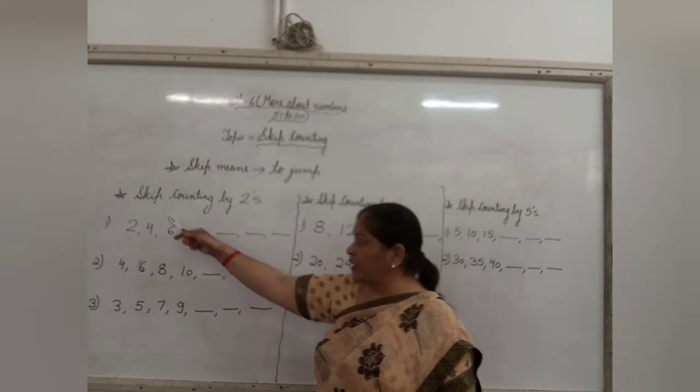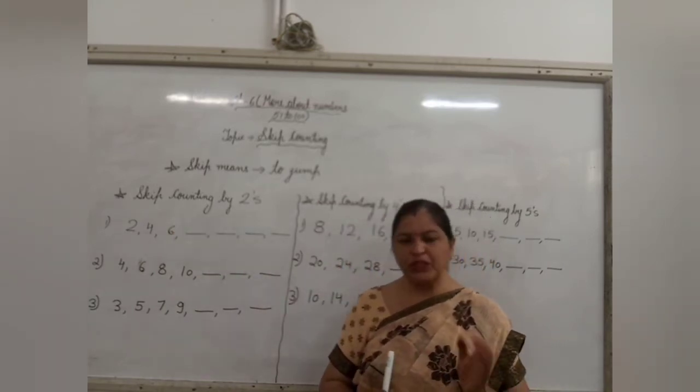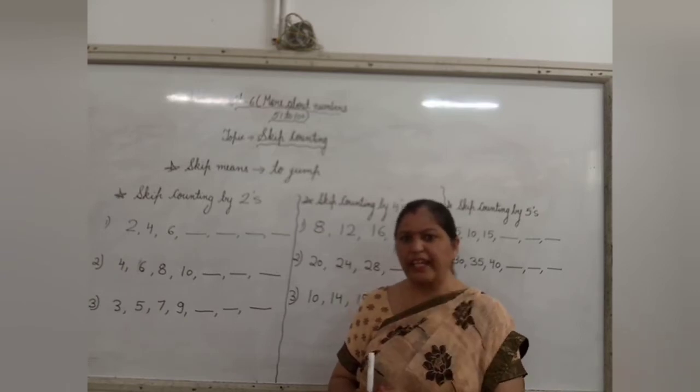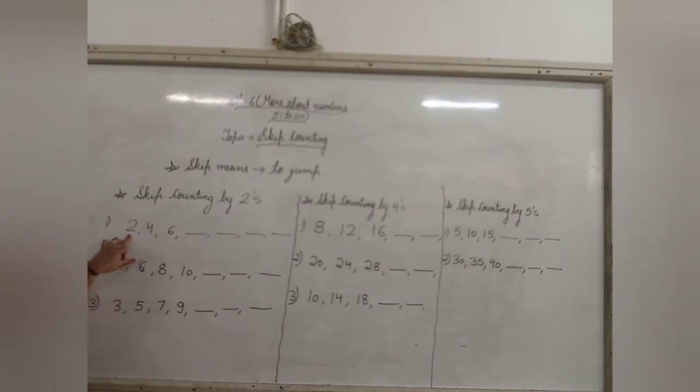So the first question is skip counting by 2. Skip counting by 2 means you have to jump the second number of the given number. Clear children? See, the first number is 2. Children, as you have jumped into 4, you have add plus 2 because skip counting by 2 is given. So 2 plus 2 is 4. Again, you have jumped to 6, so you have add 4 plus 2 that is 6.